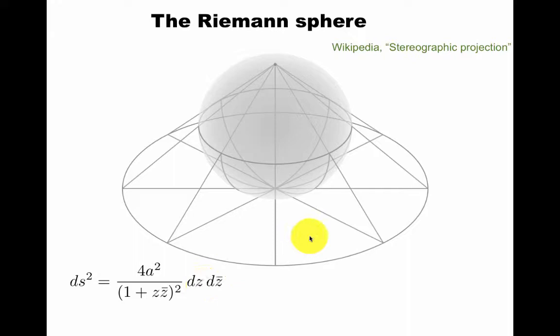The metric on the plane in this context can be thought of as this metric where A parameterizes the radius of the sphere. We can also think of it as the Riemann surface. By that we mean we have one patch, the coordinate z, and we introduce another patch, the coordinate u, that is valid close to the north pole, close to infinity, which z is not.